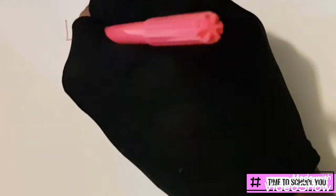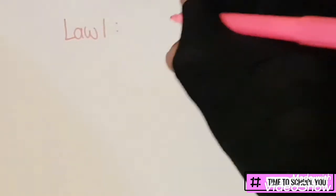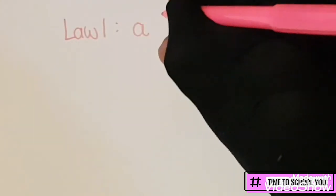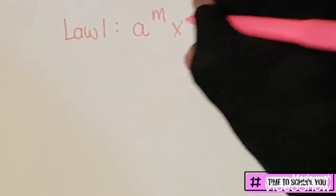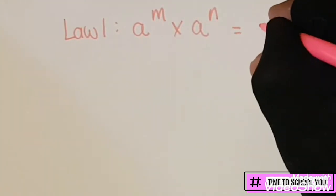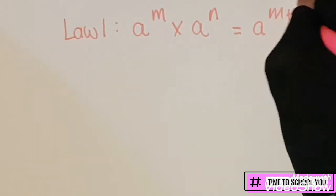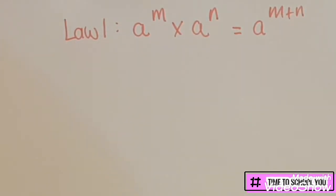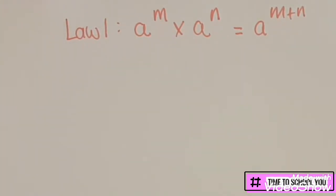Let's look at Law 1 and a couple of examples. Law 1 states that when the bases are the same and they're multiplied, then we add the exponents. So keeping this in mind, we're going to look at a few examples.